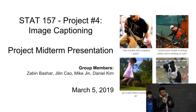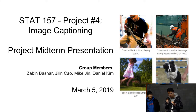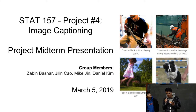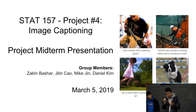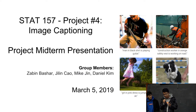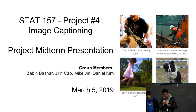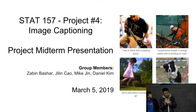So ideally our result will be the images on the right. The captions are a little bit small. So the first image will be 'man in black shirt is playing guitar.' The second image is 'construction worker in orange safety vest is working on road.' The third one, 'girl in pink dress is jumping in air.' And the final one is 'black and white dogs jumping over bars.'